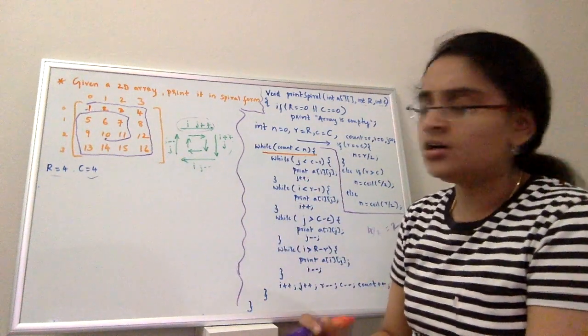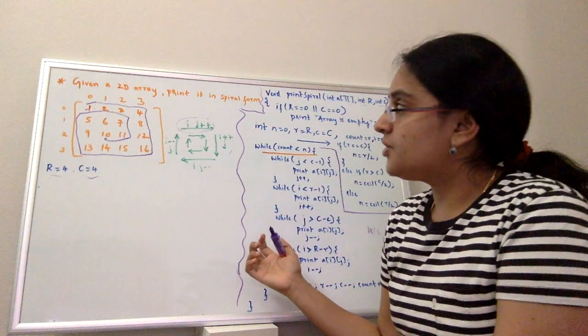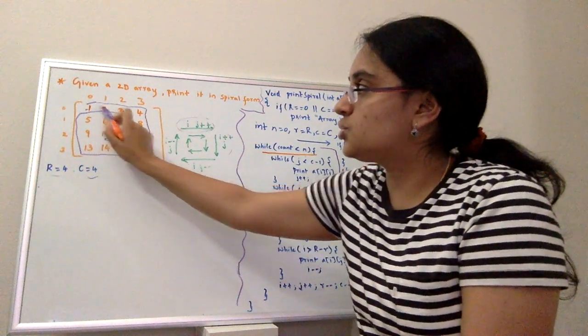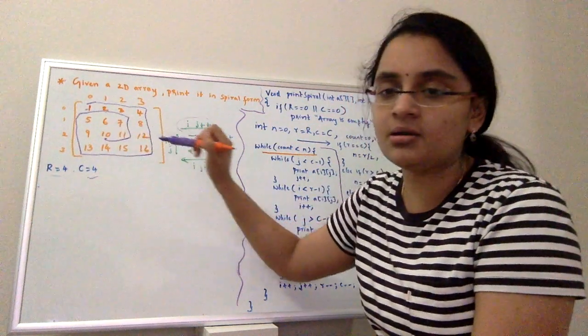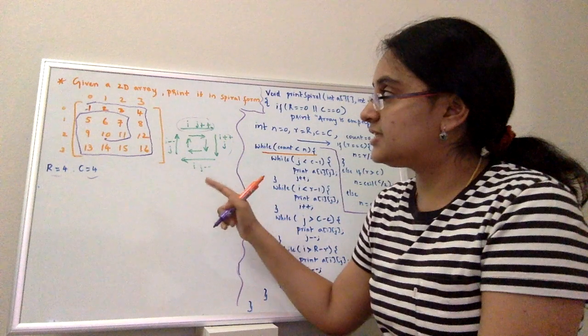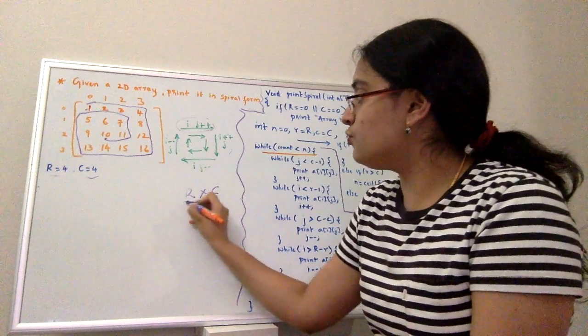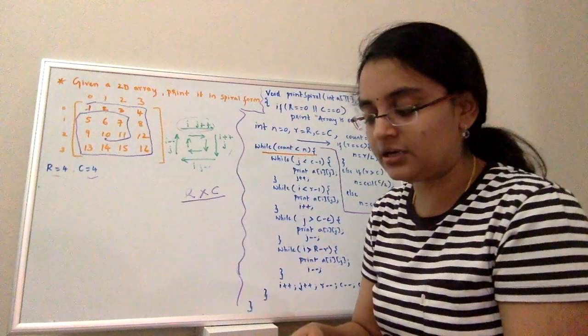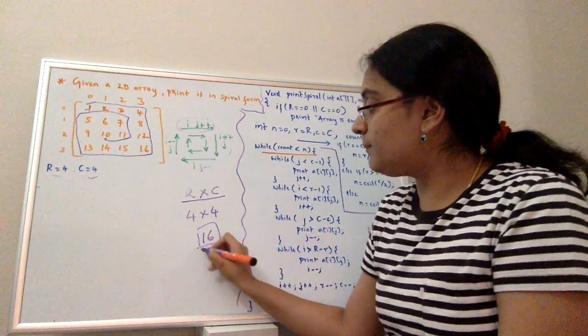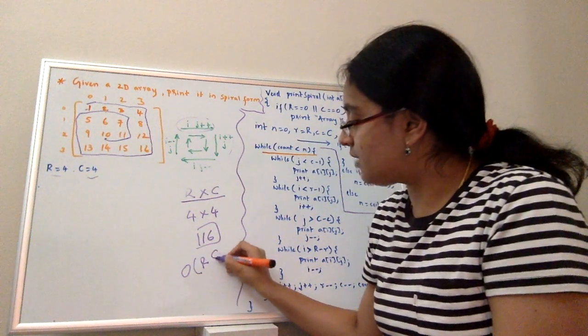What could be the complexity for this problem? Because I'm visiting every element only once. Like I'm visiting 1 once, 2 once, 3 once, 4 once. I'm not taking any extra space, I'm only visiting every element. How do I know how many elements are in the array using number of rows and number of columns? If you multiply these two, you'll get how many elements are there in that particular array. For this particular array, it's a 4 by 4 matrix, so we have 16 elements in it. So our complexity is in terms of number, it is 16.